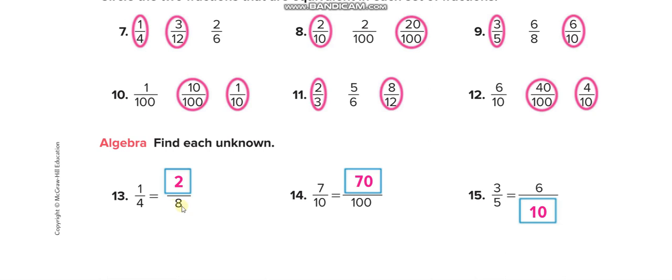They already give you one number — check from the denominator what they multiplied to get eight, then multiply the same number on top. For example, one times two gives you the numerator.